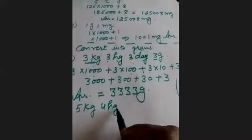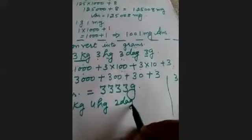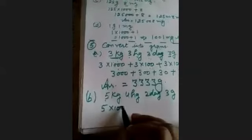Part B: 5 kg, 4 hectogram, 2 decagram, and 3 grams. 5 × 1000 + 4 × 100 + 2 × 10 + 3 = 5000 + 400 + 20 + 3 = 5423 grams.